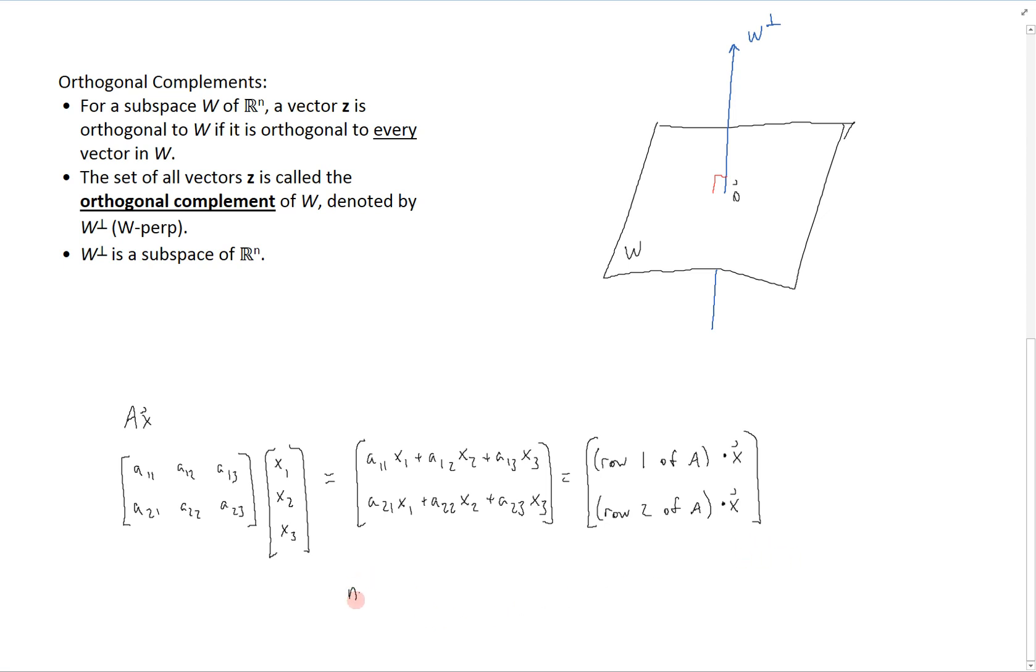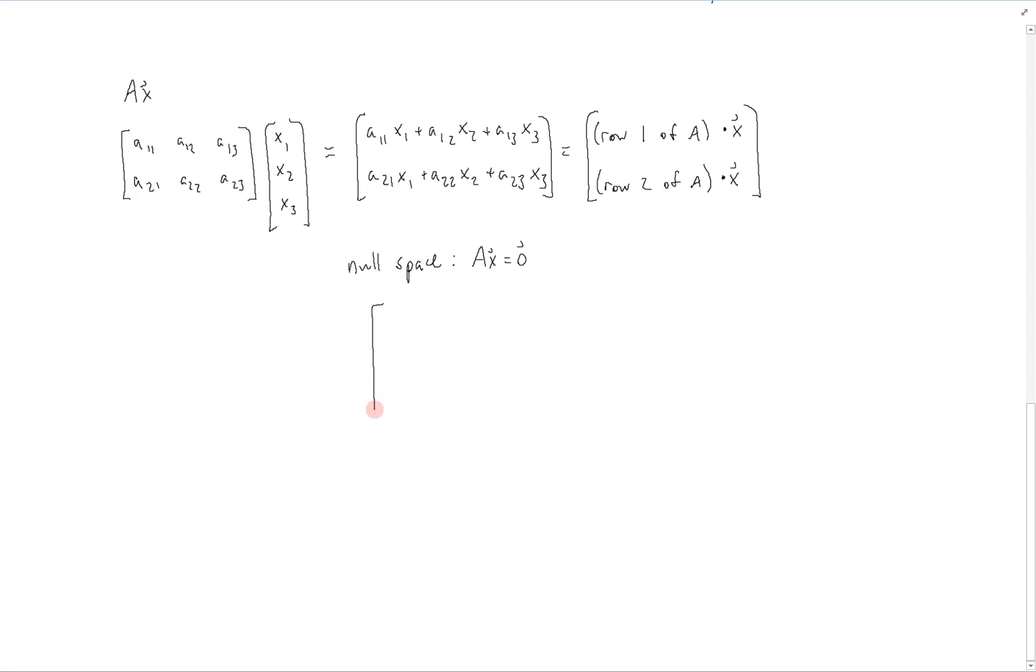Now as you recall, the null space of a matrix A is defined as all X's that map to 0 through the transformation A, and therefore by AX equals 0, the homogeneous equation. Looking at what we just wrote over here, we can see that what we get is that row 1 of A dot X, and row 2 of A dot X have to both equal 0 in order to satisfy this homogeneous equation. That means that in this case, the rows of A are orthogonal to X, since the dot product of each one has to equal 0. And this generalizes to a matrix A of any size. This will always hold for all the rows of A dot X.